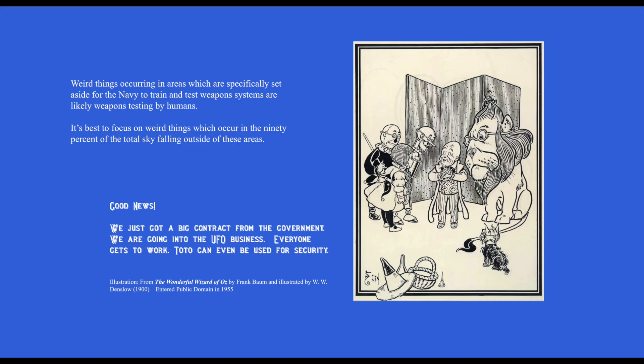Weird things occurring in areas which are specifically set aside for the Navy to train and test weapons systems are likely weapons testing by humans. It's best to focus on weird things which occur in the 90% of the total sky falling outside of these areas.